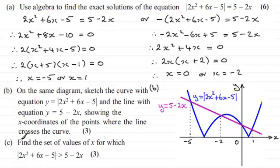Now for part C then, we've got to find the set of values of x for which the mod of 2x² + 6x - 5 is greater than 5 - 2x. So I see this as the mod graph having to be above, because we've got greater than, the line 5 - 2x. For what values of x is this graph above this one? Well, I can see that it's above the line when we go to the left of -5, as you can see here. So x has got to be less than -5.